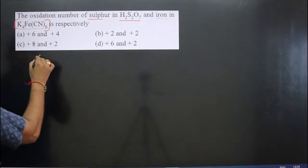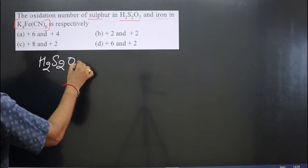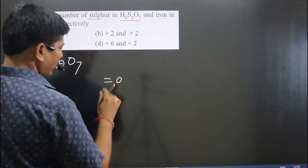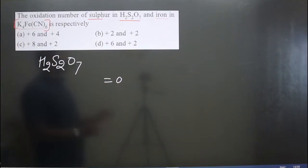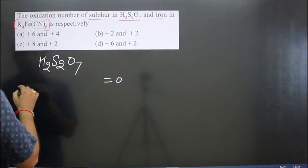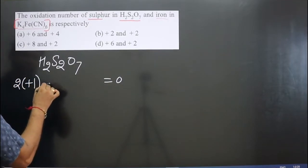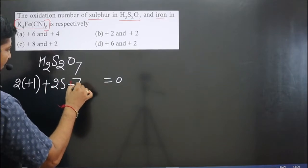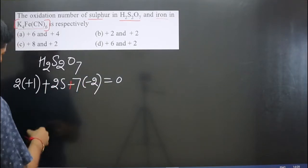The first compound is H₂S₂O₇. It is a neutral compound, so the total oxidation number of all elements equals zero. Two hydrogen atoms are there — each hydrogen is +1. Then we have two sulfur atoms and seven oxygen atoms. Each oxygen is −2.